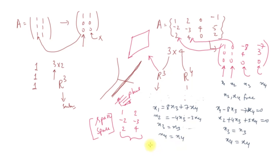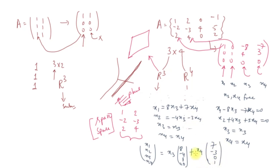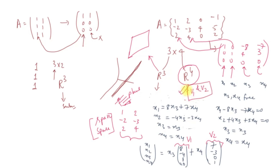We are going to span two vectors. The dimension is 4. In R to the power 4 dimension, one subspace is going to be the null space, spanned by vectors V1 and V2. So the null space is a subspace in R4.